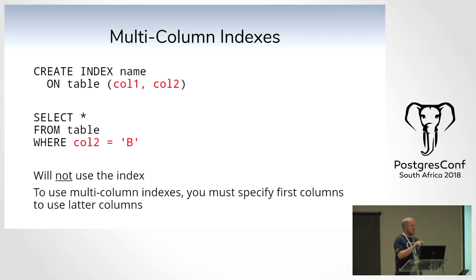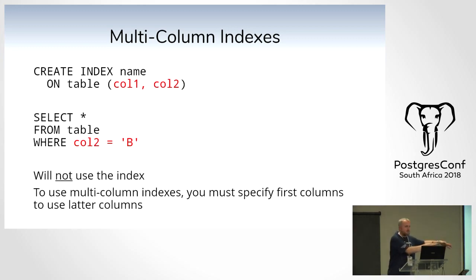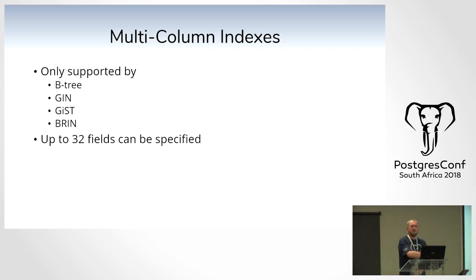With a multi-column index you always have to specify the columns in order. If your WHERE clause only uses column2 and not the first column (column1) that was specified when the index was created, it will not use the index. You can have up to 20 columns — if you specify the first 15 it uses the index, if you specify only the first one it still uses the index, but if you specify the first and the 20th it will only use the first. Multi-column indexes are supported by B-tree, GIN, GiST, and BRIN — not hash or SP-GiST. Up to 32 fields are allowed.